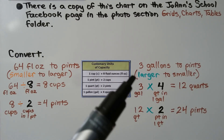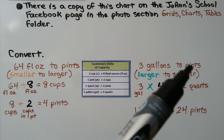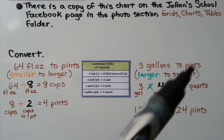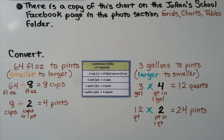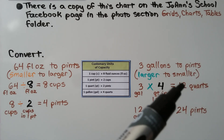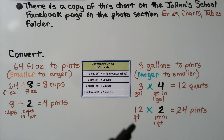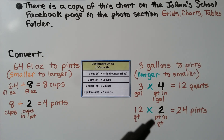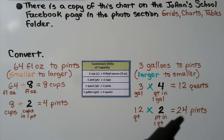Here we need to convert three gallons to pints. We're going from a larger unit to a smaller unit, so we use multiplication. Three gallons times four quarts per gallon equals twelve quarts. Then twelve quarts times two pints per quart equals twenty-four pints. Sometimes we need to convert two times.